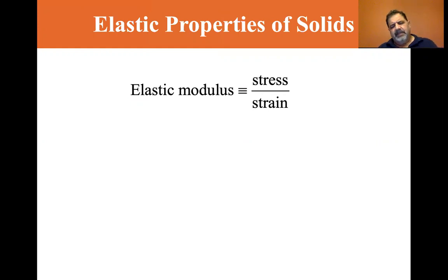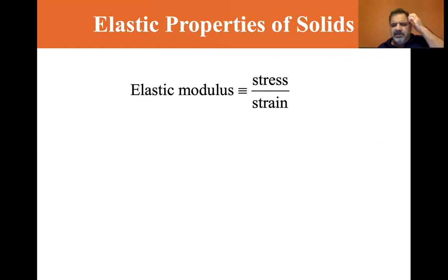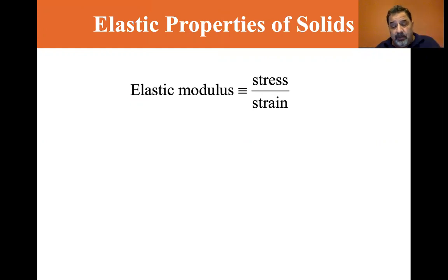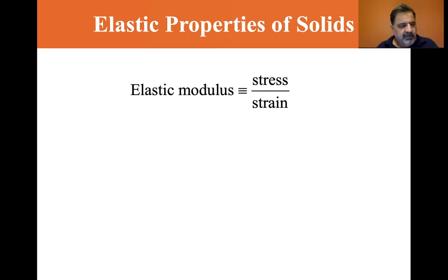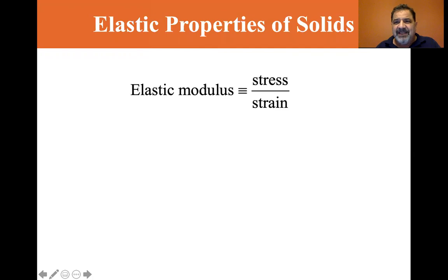You can imagine the Poisson ratio like an eraser. If you push on an eraser, how much it bulges — that's the Poisson ratio. There are even some materials with negative Poisson ratios. Anyway, we're looking at the elastic properties of solids.